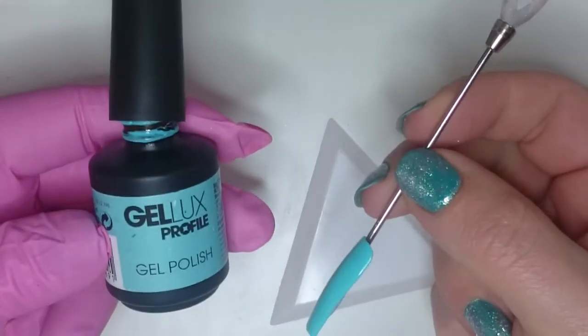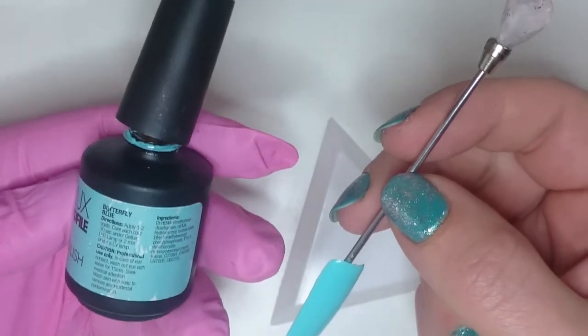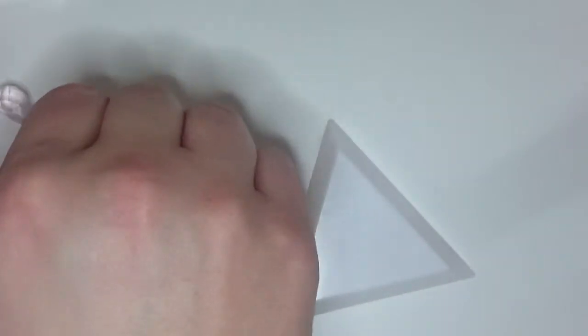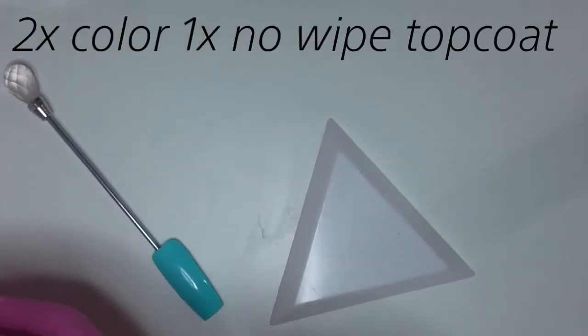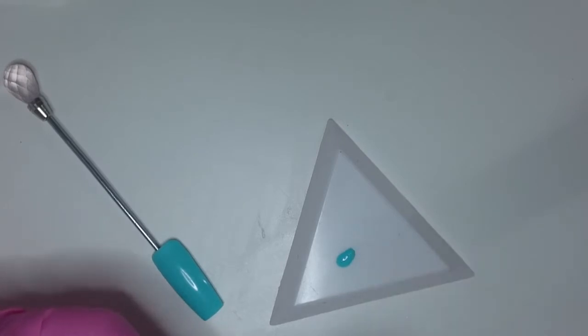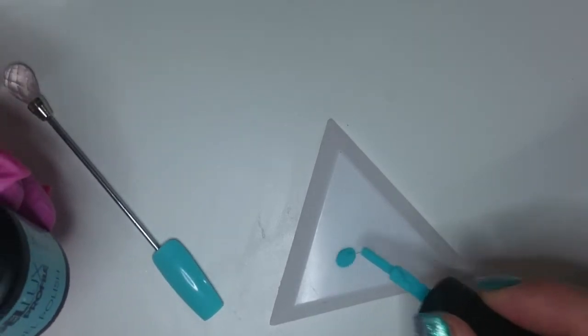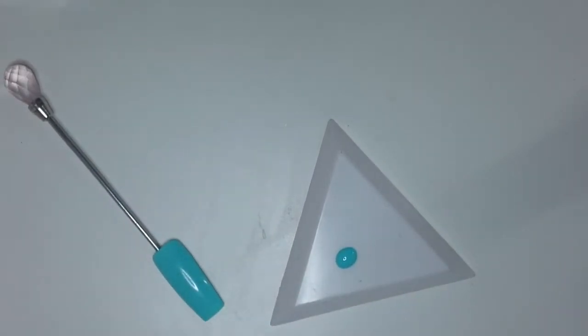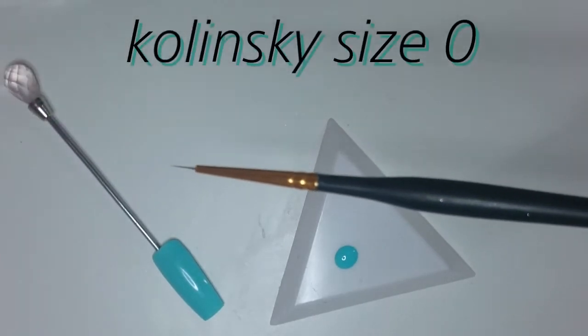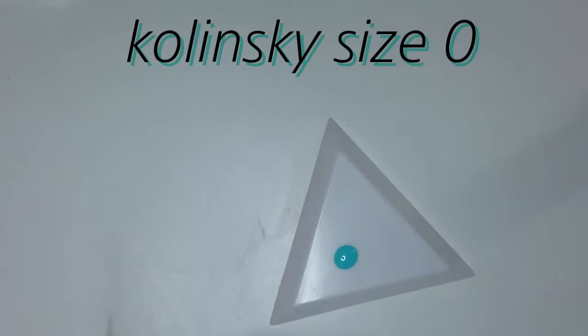So I've painted this nail in gel polish, this is Butterfly Blue. I put two coats of that on and a layer of no wipe top coat. I'm going to decant a small amount of this onto a little palette and then I'm going to take a fine detailing brush, this is a Kolinsky size zero brush I got off Amazon.